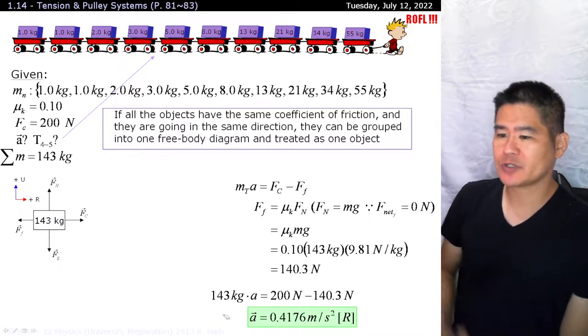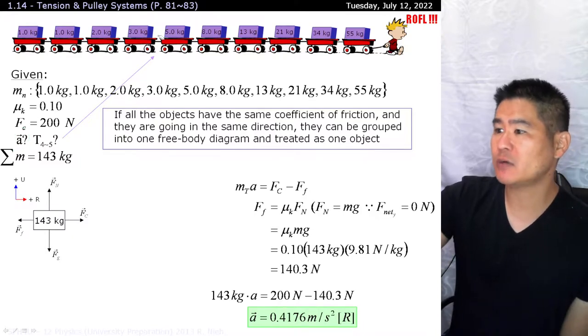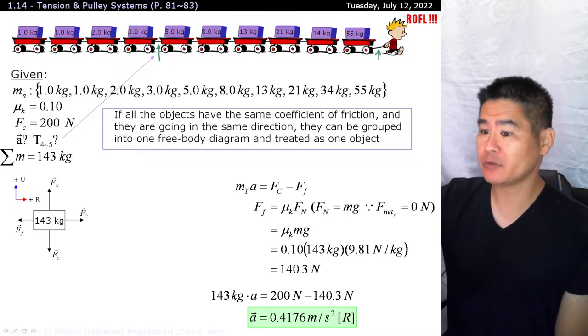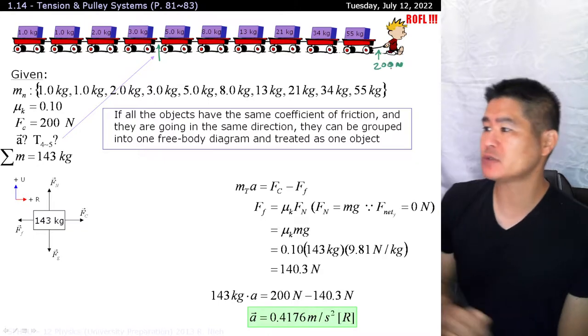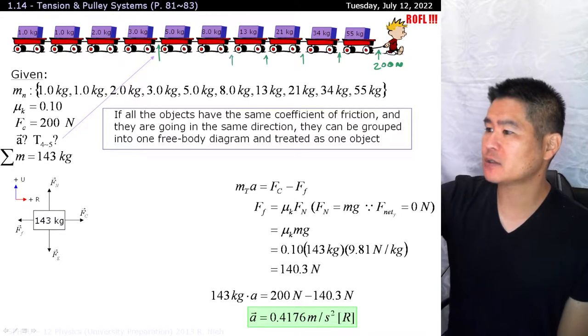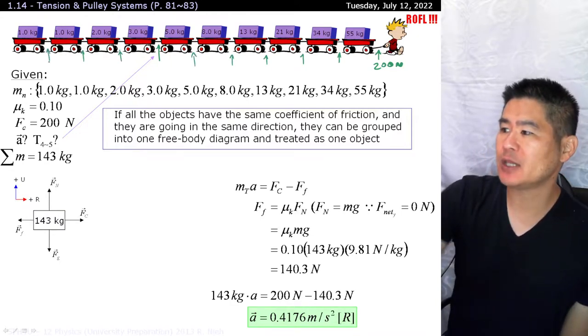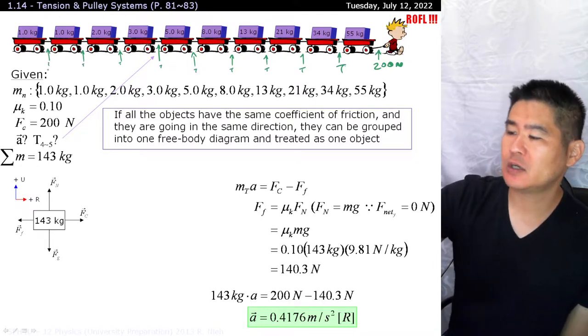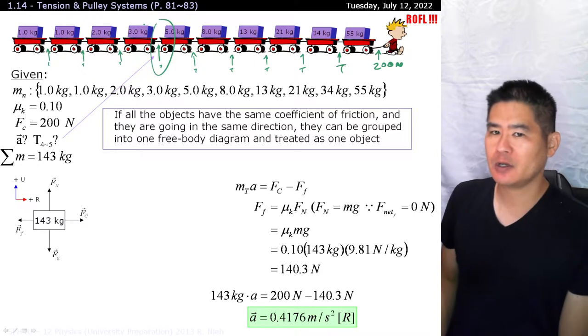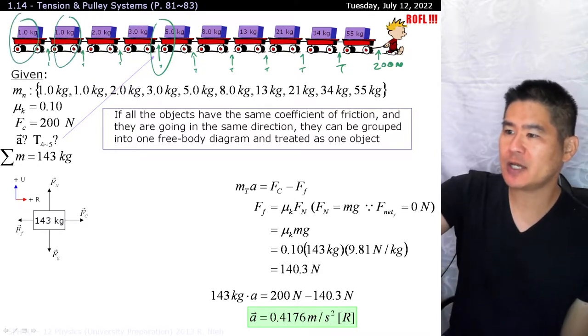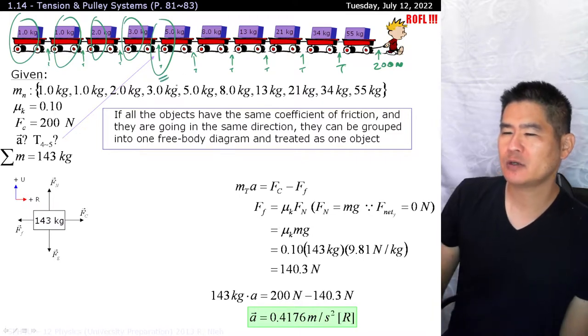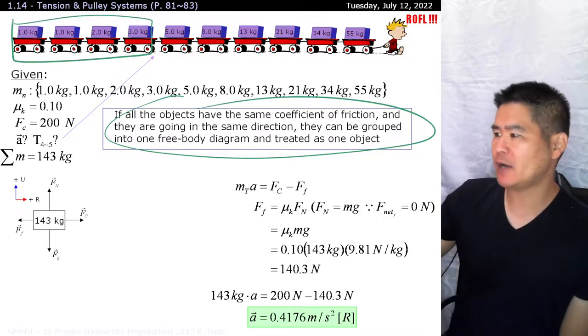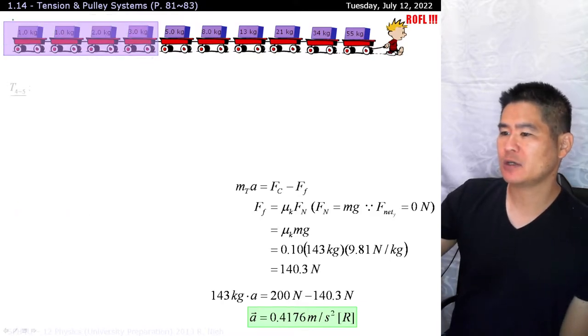But there's two parts to this question. First off, you want to find out what the acceleration of the system is. But part B is, what exactly is the tension over here? One thing we know logically is that if he's pulling with a force of 200 newtons, then the tension over here is 200 newtons. And the tension for every single rope that's after it will be a lot less. In this question, we're wondering what is the tension at this point here? How about we just reincorporate the super shortcut again?